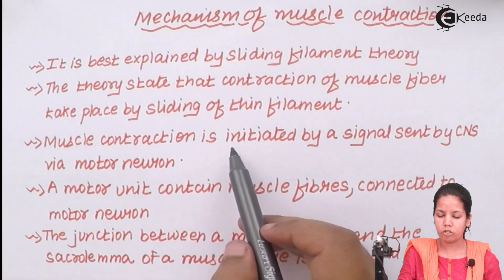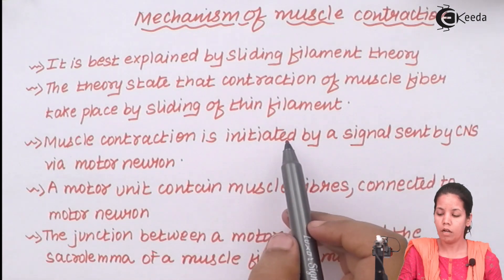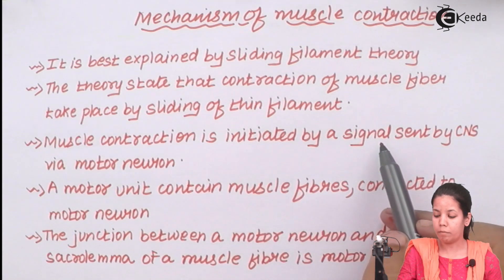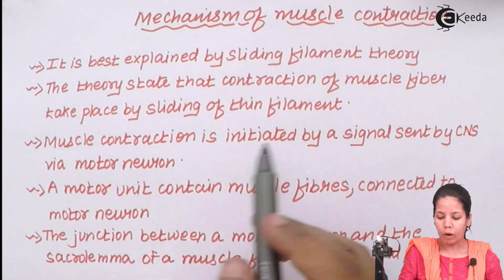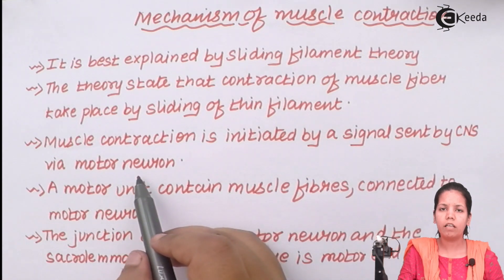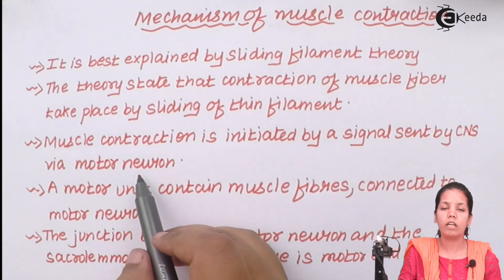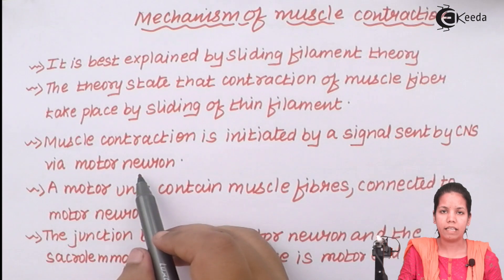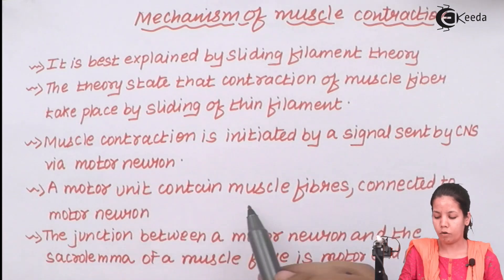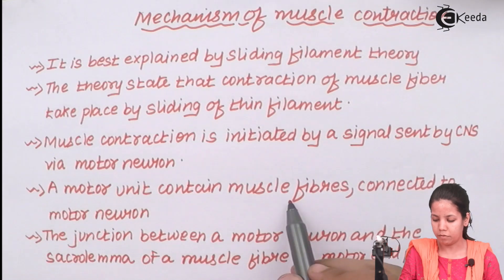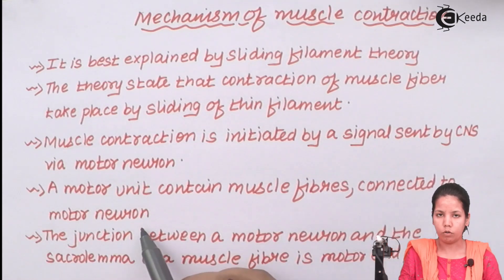Now muscle contraction is started or initiated once a signal is given by your central nervous system via motor neuron. For example, if you have to run, so that information has to be processed in your brain or central nervous system and that information has to be passed down with the help of neurons to your parts of legs. The motor unit consists of motor fibers or muscle fibers connected to motor neuron.